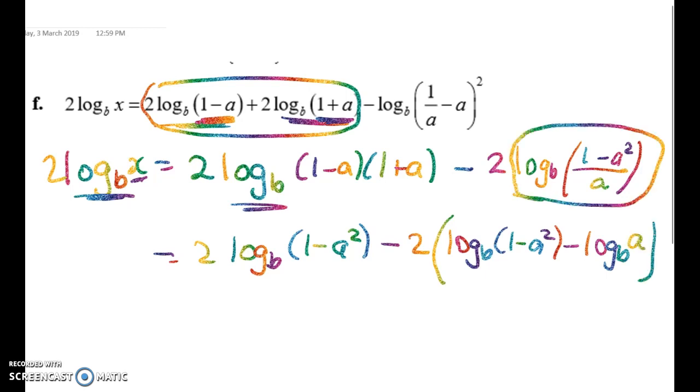All right, so this is applying the quotient rule for product for logs to this thing here. Now let's do some cleaning up. Well, I've got this minus this, which is very nice, plus 2 log to base b of a.